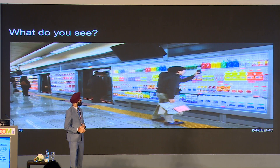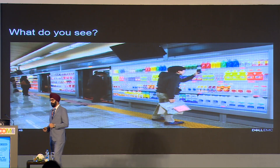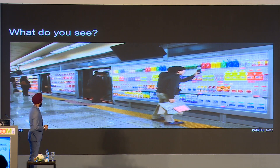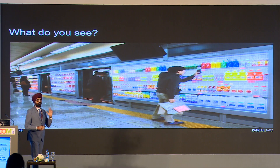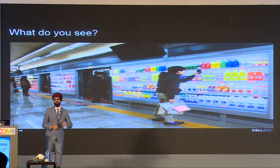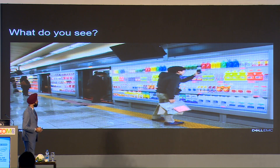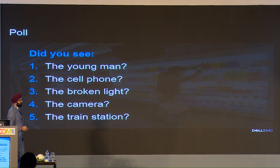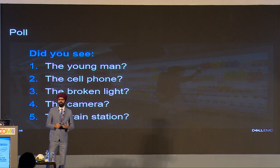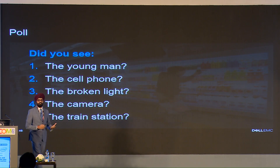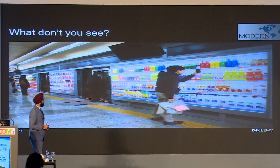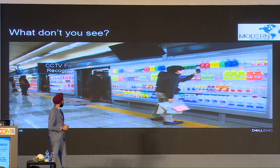We'll start with this picture. I'm sure all of you can see a lot of things here. Just want maybe a few seconds for you to capture a few things, and I'll go over what really stands out. Did you see a young man, a camera, a phone, a train, and a broken light? What actually was there was a modern data center.